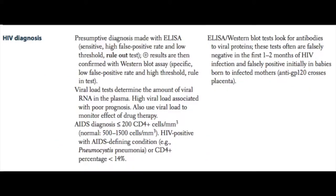HIV diagnosis is a two-step process. First, a presumptive diagnosis is made with an ELISA test. This is a sensitive test with a high false positive rate and a low threshold, making it a rule-out test used to screen for HIV.